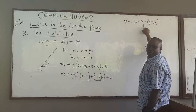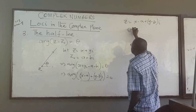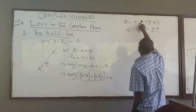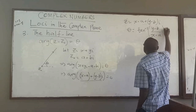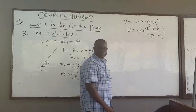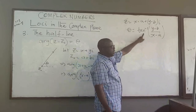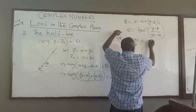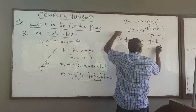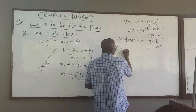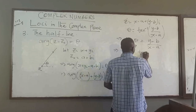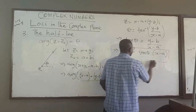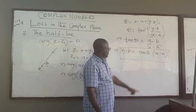So if we have a complex number z equal to (x minus a) plus (y minus b)i, we find its argument. Remember the argument equals the inverse tangent of the imaginary part (y minus b) over the real part (x minus a). From here, you can take the tangent of both sides, so tan(theta) equals (y minus b) over (x minus a), which means y minus b equals tan(theta) times (x minus a). And of course, this is the equation of a line.